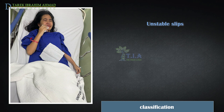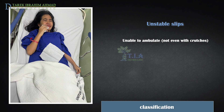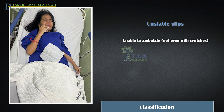Unstable slips are those in which the epiphysis is displaced from the metaphysis or the patient is unable to bear weight, even with crutches, regardless of duration of symptoms. Most of these patients present with severe pain similar to a fracture of the hip. Because manipulation may cause further displacement, patients with unstable slips should immediately be placed in a wheelchair or on a stretcher and remain non-weight-bearing until they have received definitive treatment.